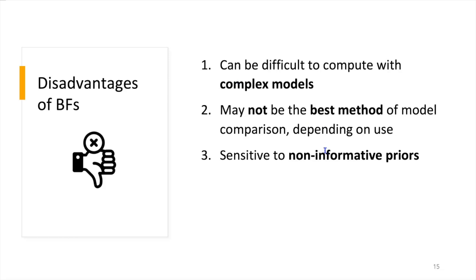Finally, Bayes factors are sensitive to non-informative priors. For example, using a uniform prior — typically assumed to be non-informative — can actually put increased weight on the null model when computing Bayes factors. We must be very careful in prior selection to ensure we are not unintentionally favoring one model over the other.